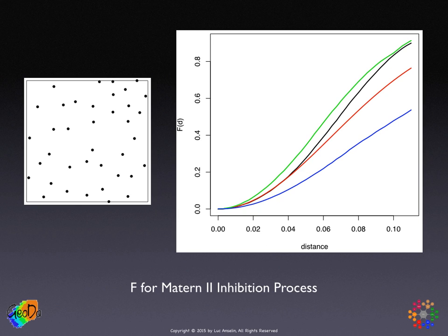The third example is a regular pattern using the Matern 2 inhibition process. Here the black line is above the red line, but not quite enough above to conclude it is significantly different from a spatially random pattern. To summarize, the F function uses the same logic as the G function, but with two key differences: it is computed using nearest neighbor distances from reference points to events, and the interpretation is the opposite of the G function. Below the reference line means clustering; above means regular or inhibition.